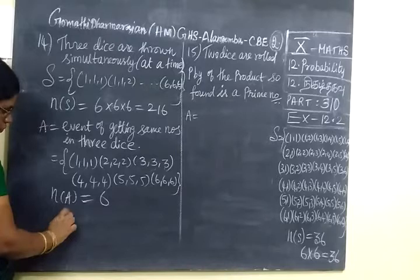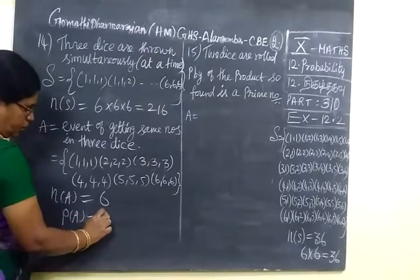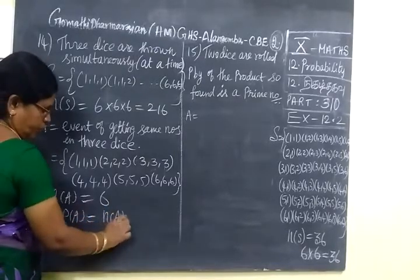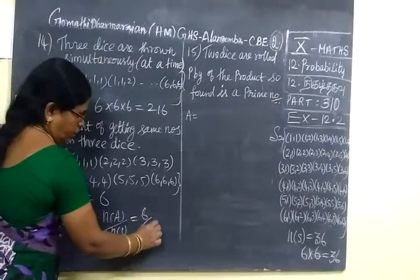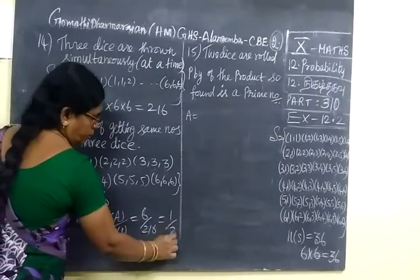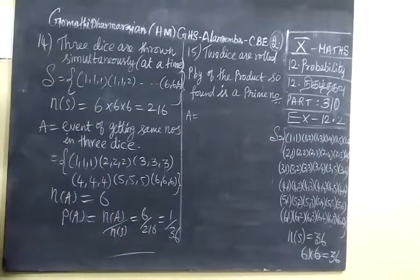So P(A)=n(A)/n(S)=6/216=1/36. This is a very simple sum.